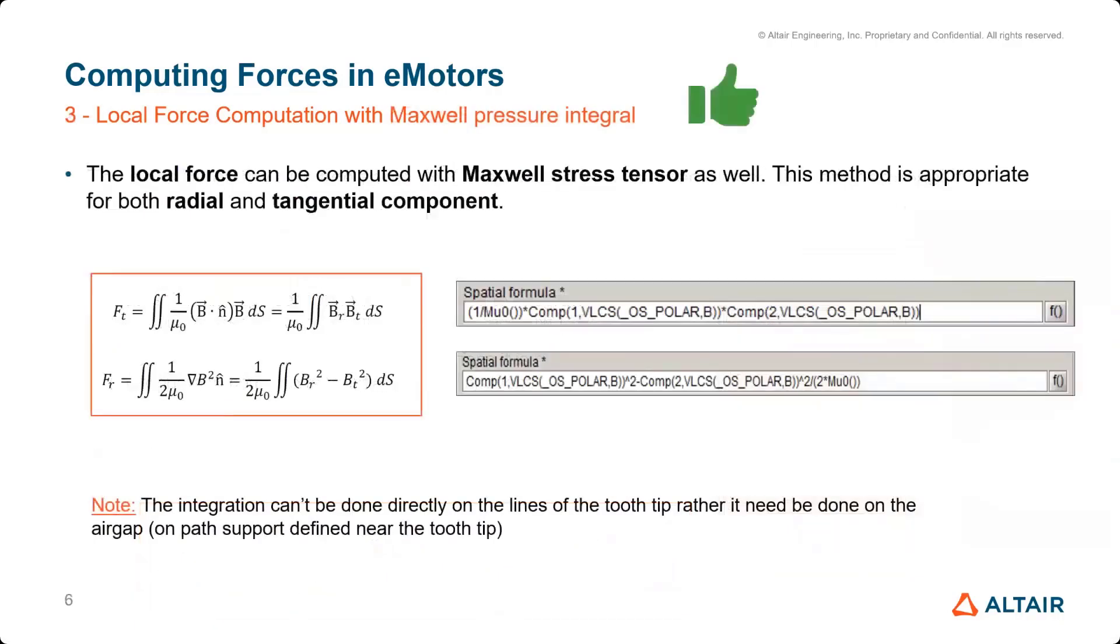But finally, maybe the best way to compute local forces and especially when it comes to forces to NVH is using the Maxwell stress tensor. So you could write this formula by yourself, but don't worry, we can do this automatically. This formula are based on the radial and tangential component of B in the air gap. And this method, it needs to be applied slightly away from the magnetic material inside of the air gap.